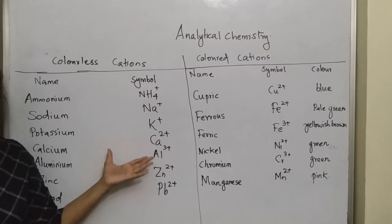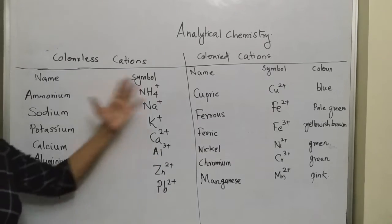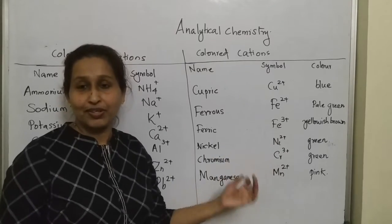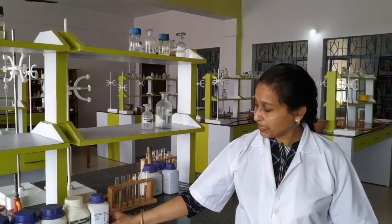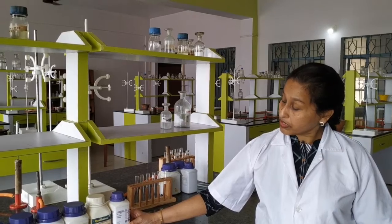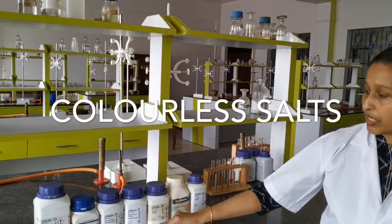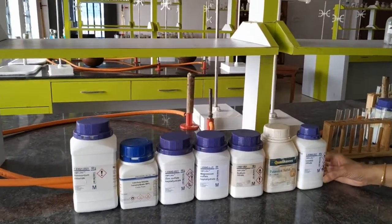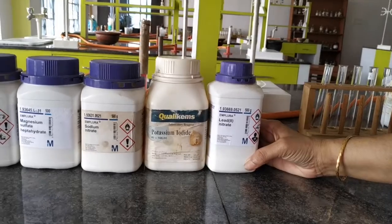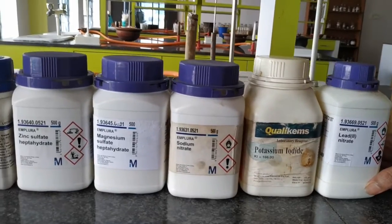So these are the colorless cations — their salts look white and crystalline. And these are the colored cations. Today I will familiarize you with all the salts, their physical appearance — their color and their nature. So I have placed here all the salts which are colorless, or white and crystalline in nature. That means lead, potassium, sodium, magnesium, zinc, calcium, and ammonium salts.